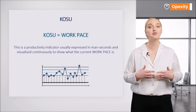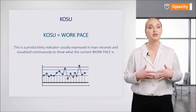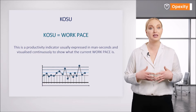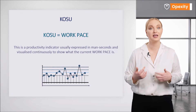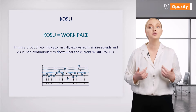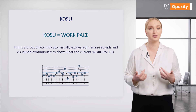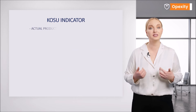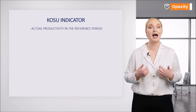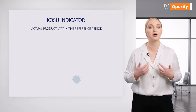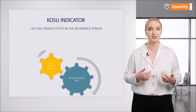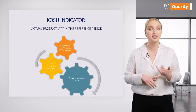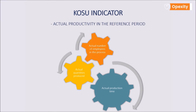The unit of productivity used in Kosu is usually a man second and is continuously visualized. Kosu indicates what the actual labor productivity of a given workstation, manufacturing cell, or production line is.